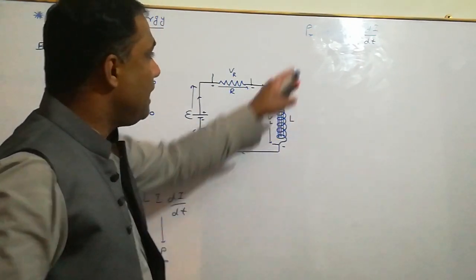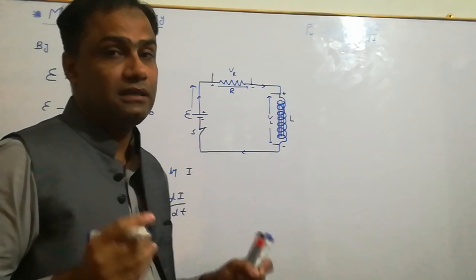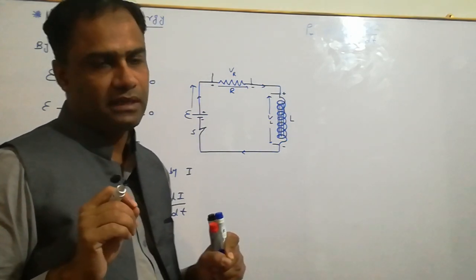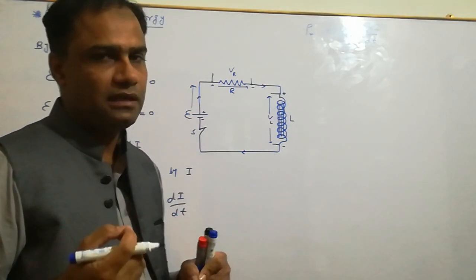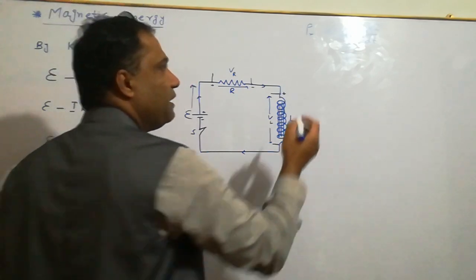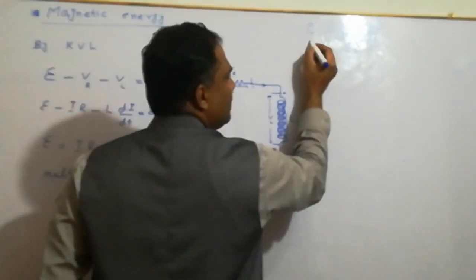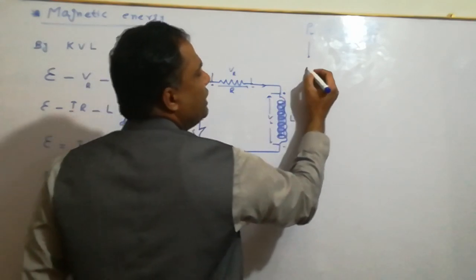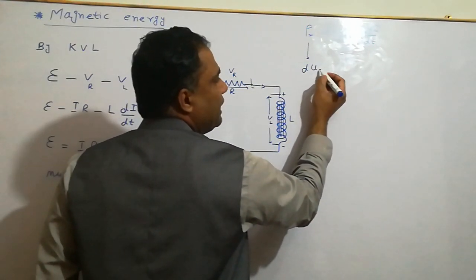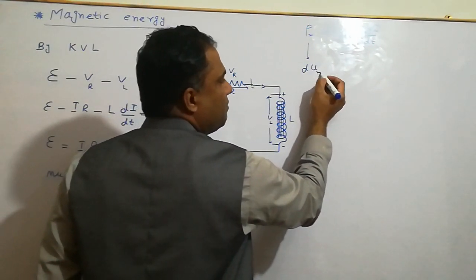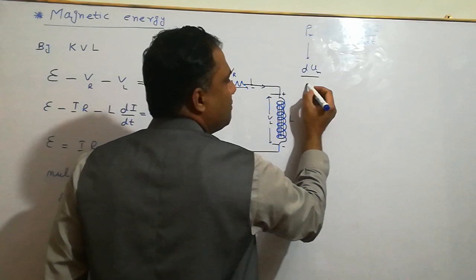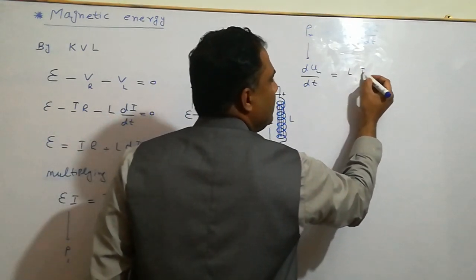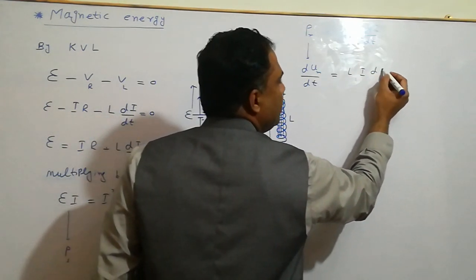Magnetic power Pm is equal to LI dI/dt. This is the magnetic power developed across the inductor. Power is work done per unit time, the rate of doing work. So dU/dt, energy per unit time, is equal to LI dI/dt.